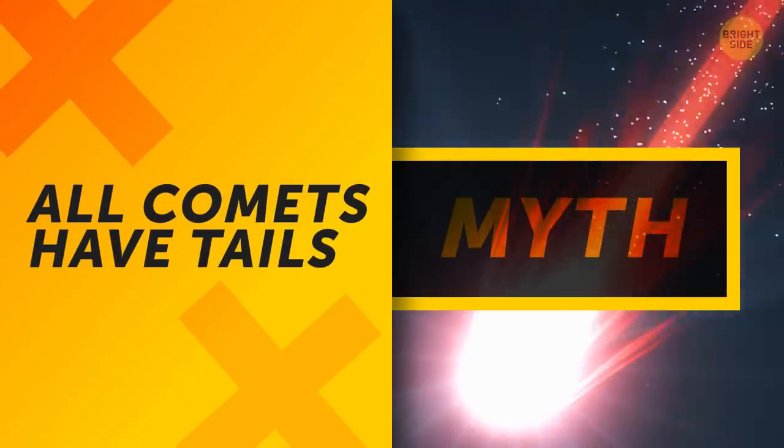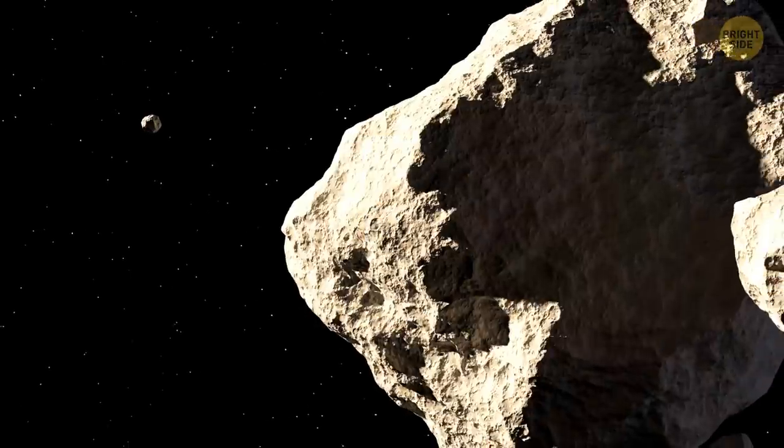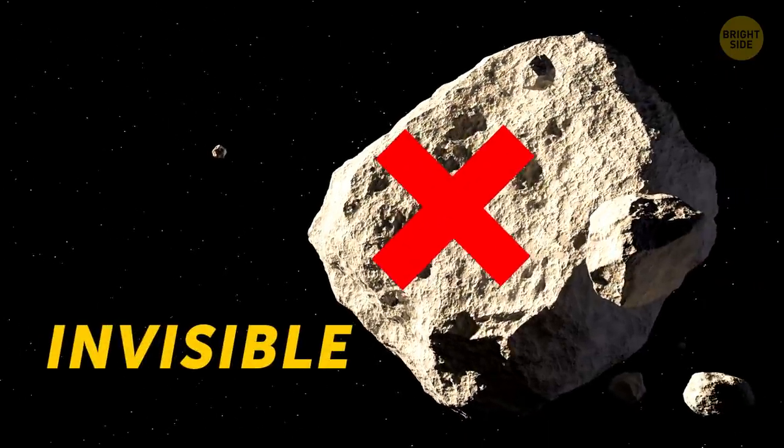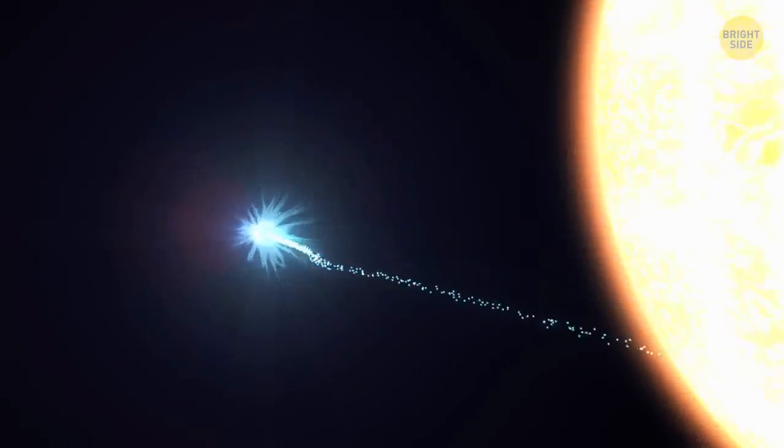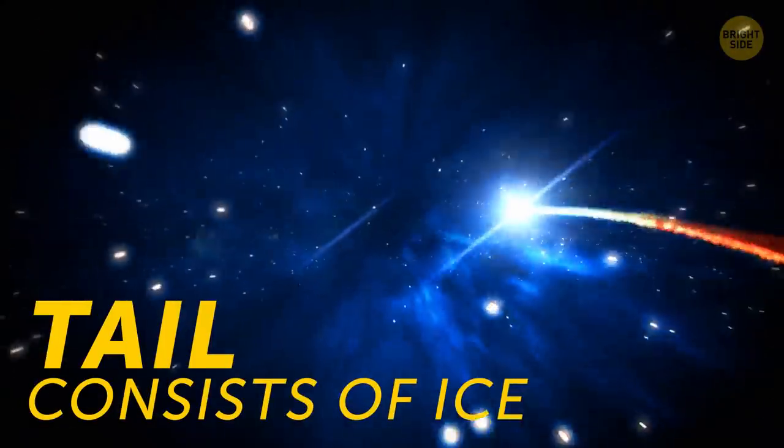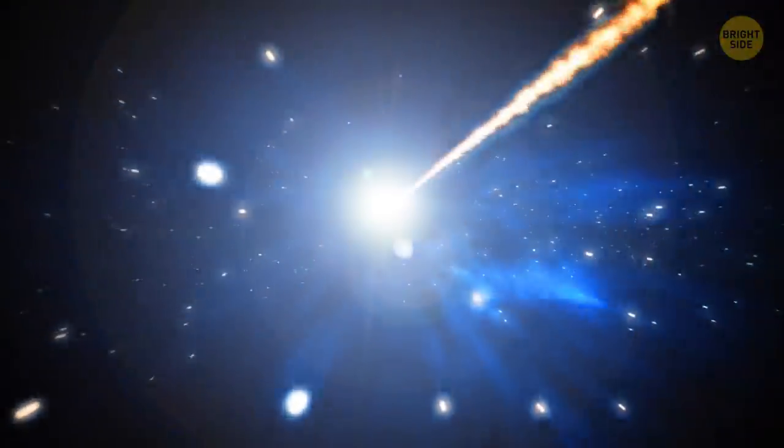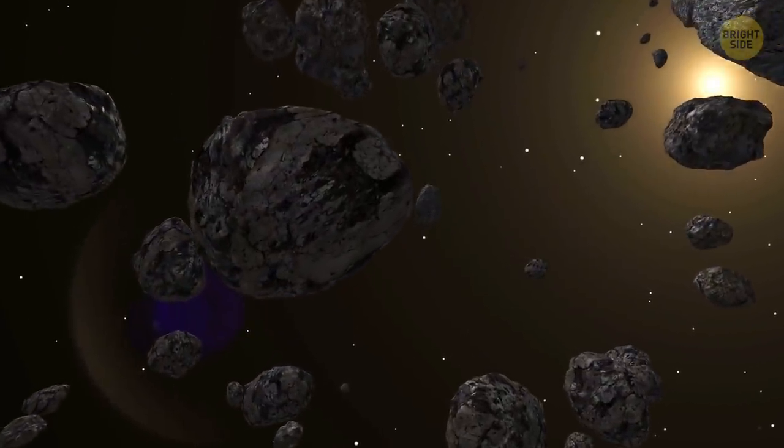All comets have tails. In reality, comets are almost invisible before they get close to the star and their tails appear. This tail consists of ice scattering away when the comet gets closer to the heat of the star. If the comet isn't heated, it won't have a tail.